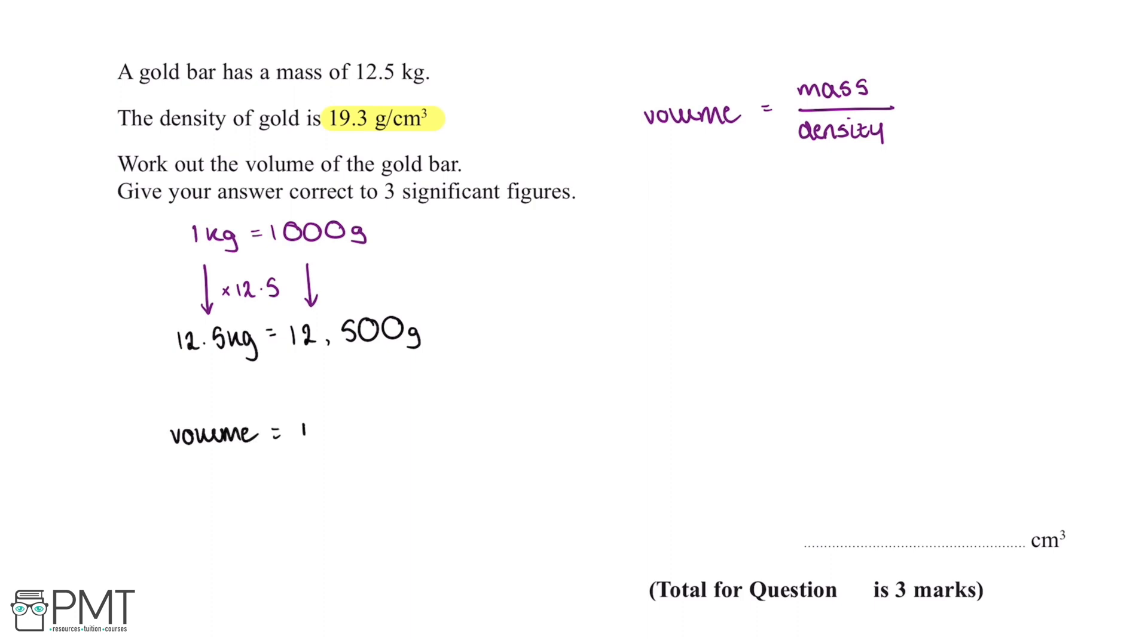Our mass in grams is 12,500 and our density is 19.3. This gives us an answer of 647.67, and the units for our volume are centimeters cubed.